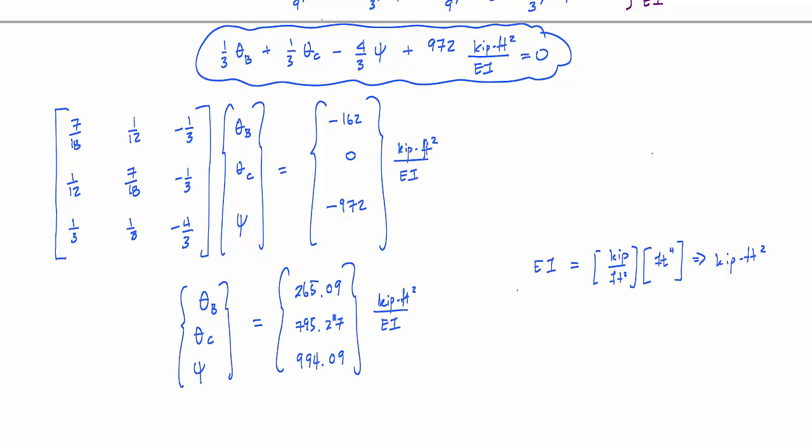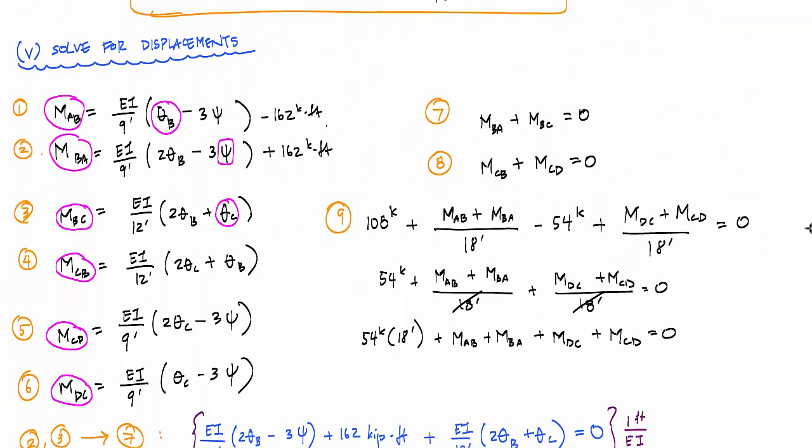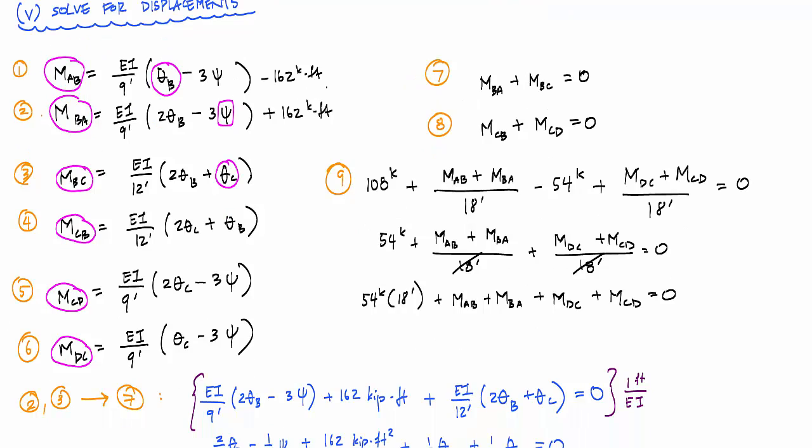All right. So those are my rotations and my chord rotation, my rotation at B, rotation at C. And now, all we got to do is take these displacements, substitute them back into the slope deflection equations. And we have our moments, we have our end moments. And so M_AB, using that slope deflection equation, it was, let's see, EI over nine feet. If I go back way over here, this EI over nine feet, this is that equation I'm using to calculate the end moment AB.